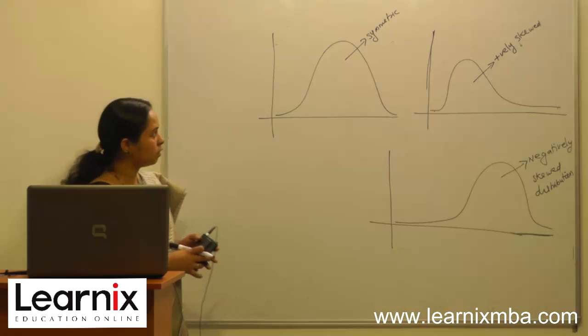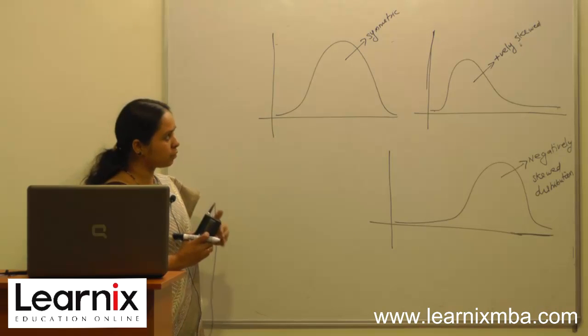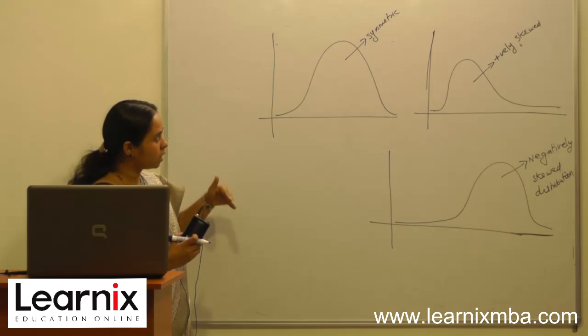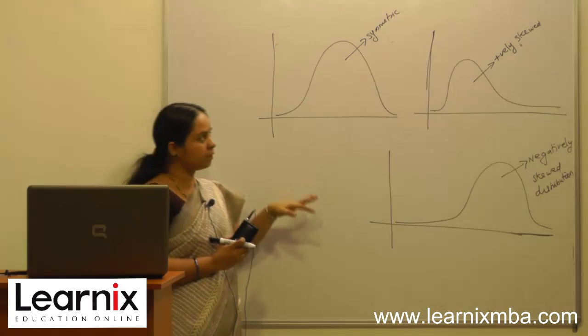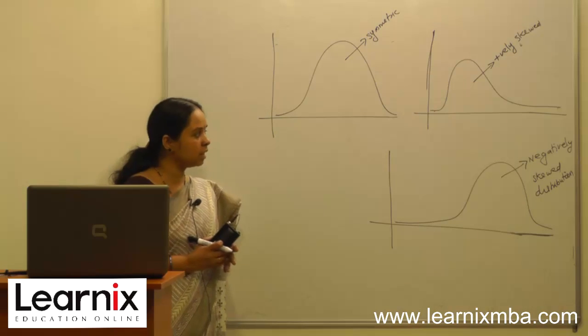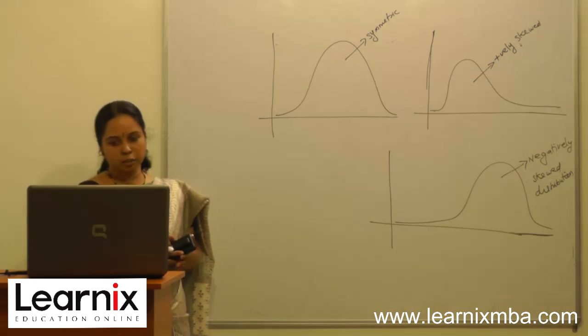Based on the skewness we can classify the distribution as symmetric distribution, positively skewed distribution, as well as negatively skewed distribution.